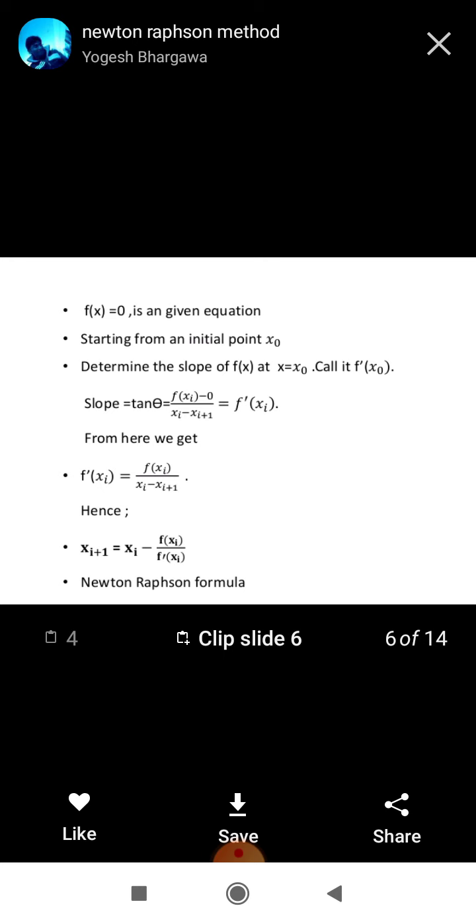f prime xi upon xi minus xi plus 1, or finally xi plus 1 is equal to xi minus fxi upon f prime xi. This is the formula of Newton-Raphson method.